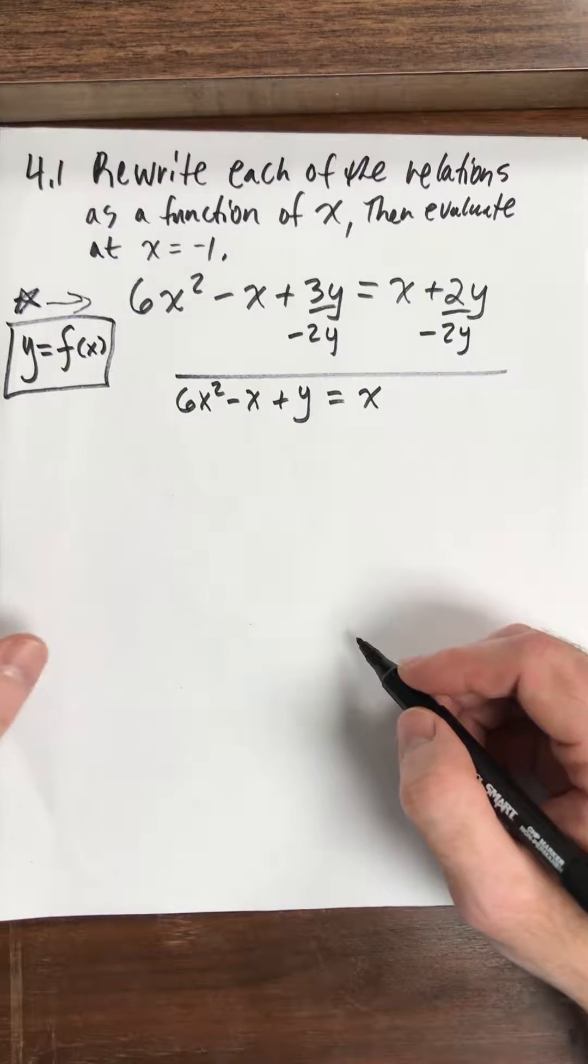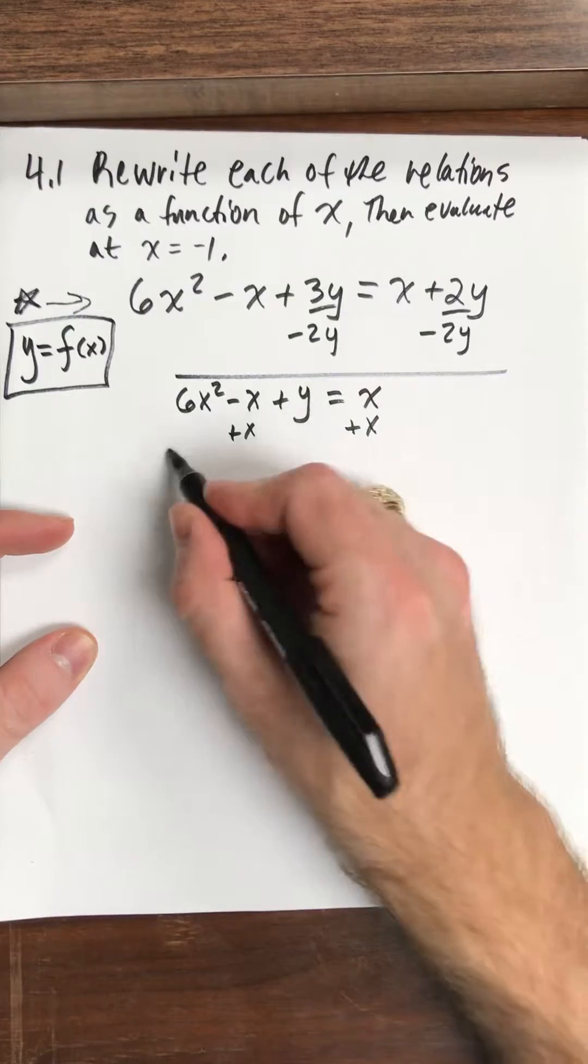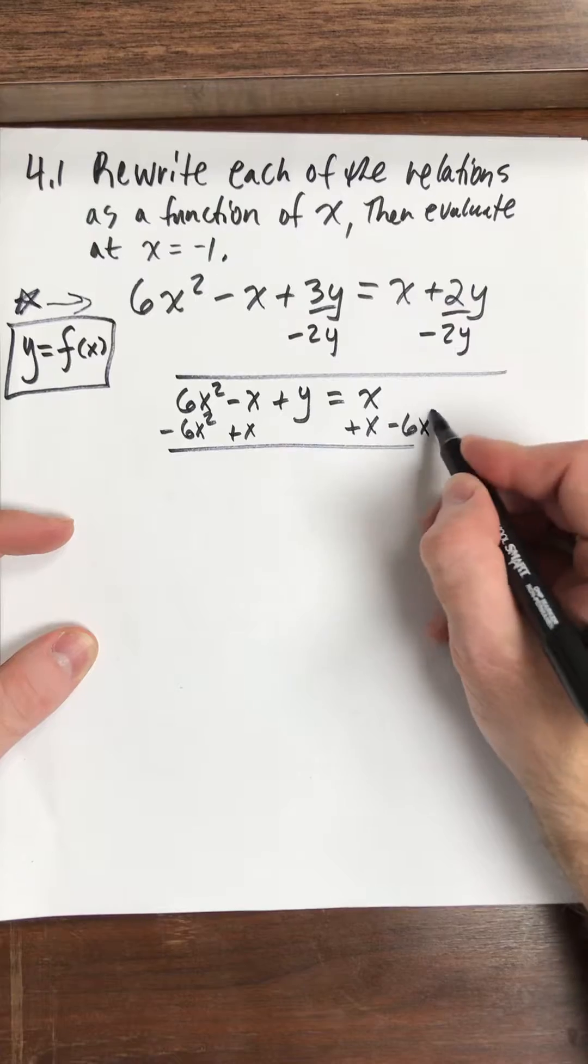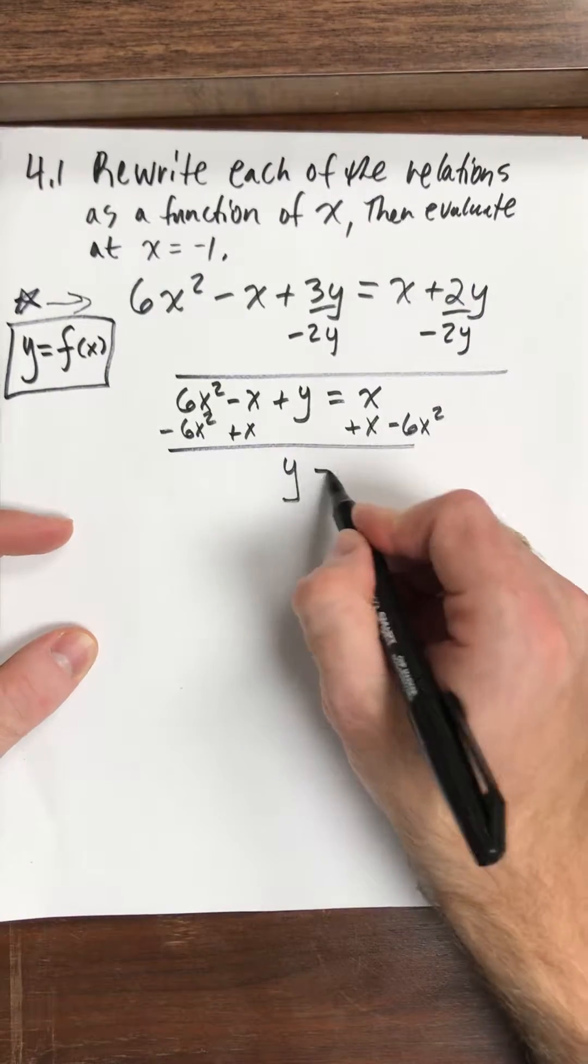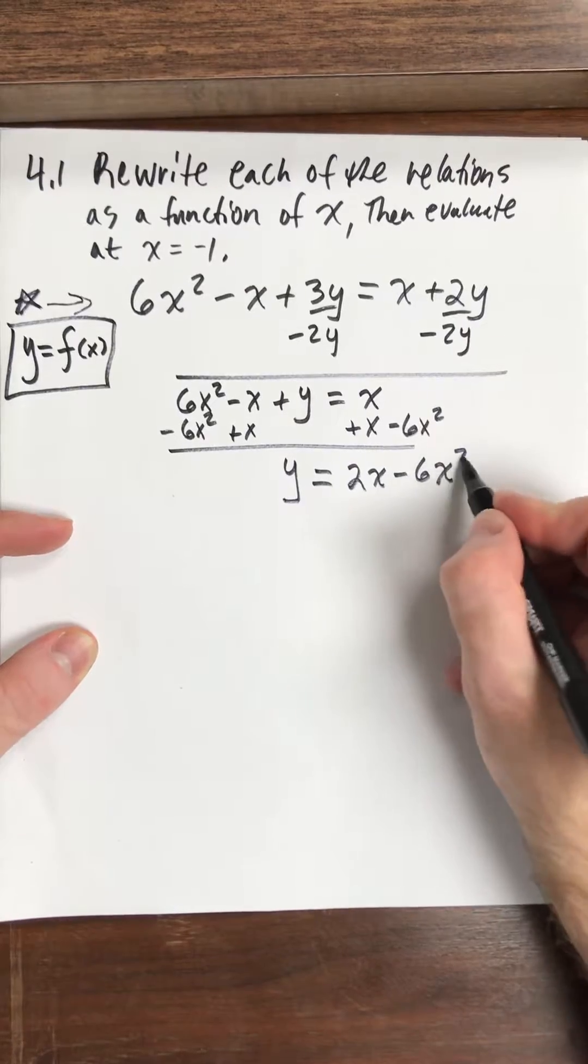Now to solve for y I need to add x to both sides and subtract 6x squared from both sides. So what do I have? y equals 2x minus 6x squared.